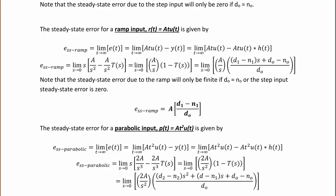Note that the steady-state error due to the ramp will only be finite if d0 equals n0, or the step input steady-state error is 0. And when that happens, then ess_ramp simplifies to the following equation. This is only true when d0 is equal to n0.